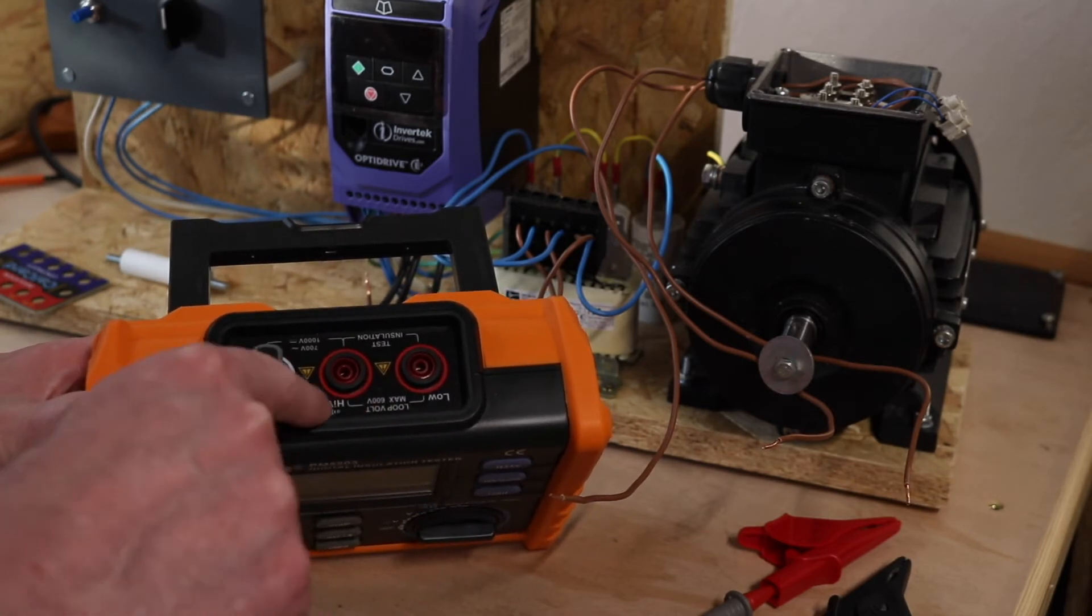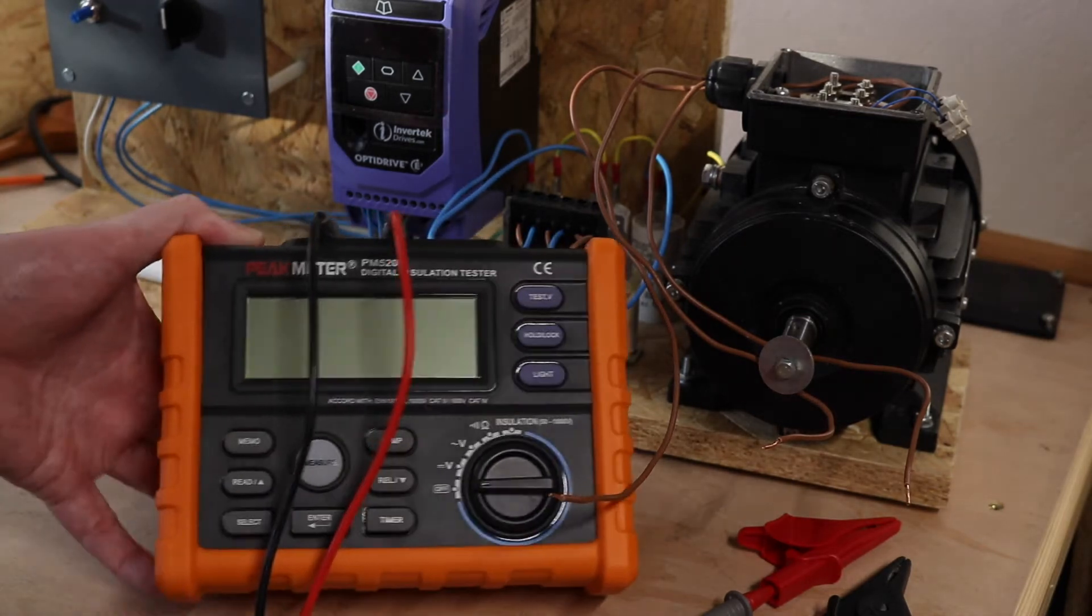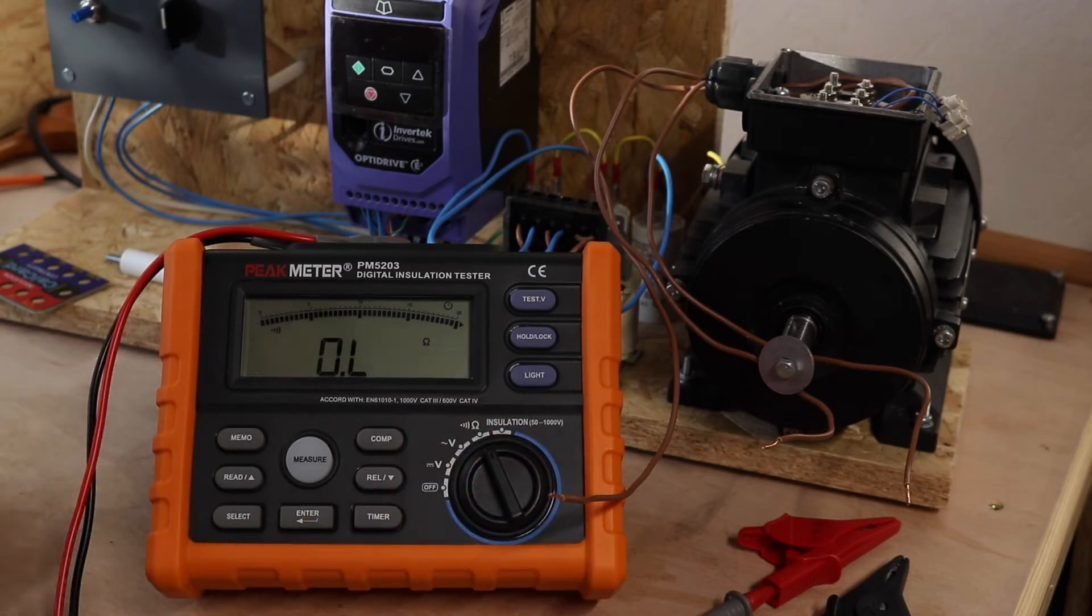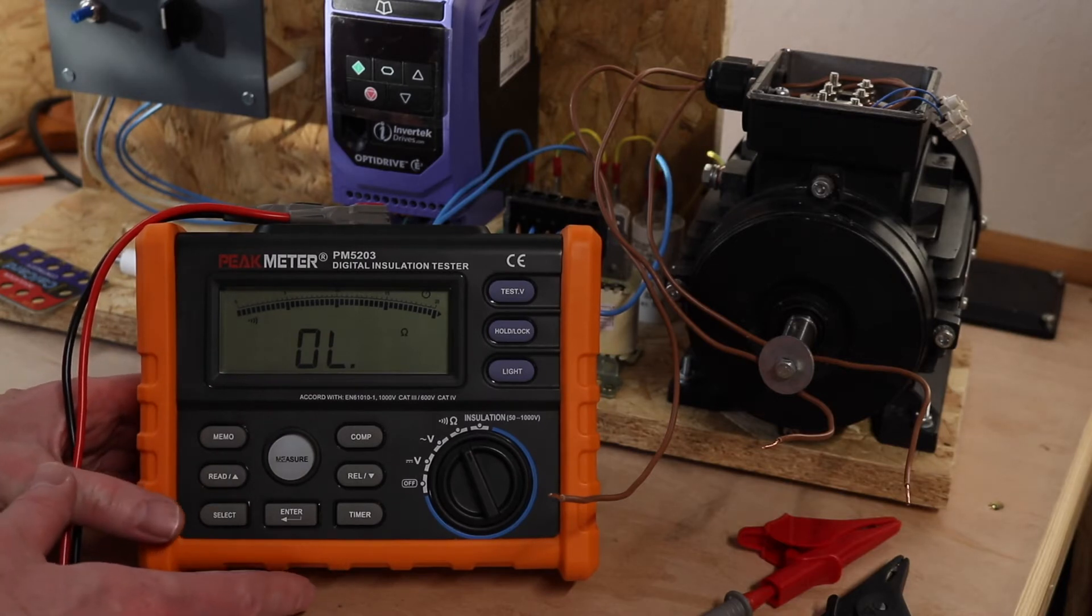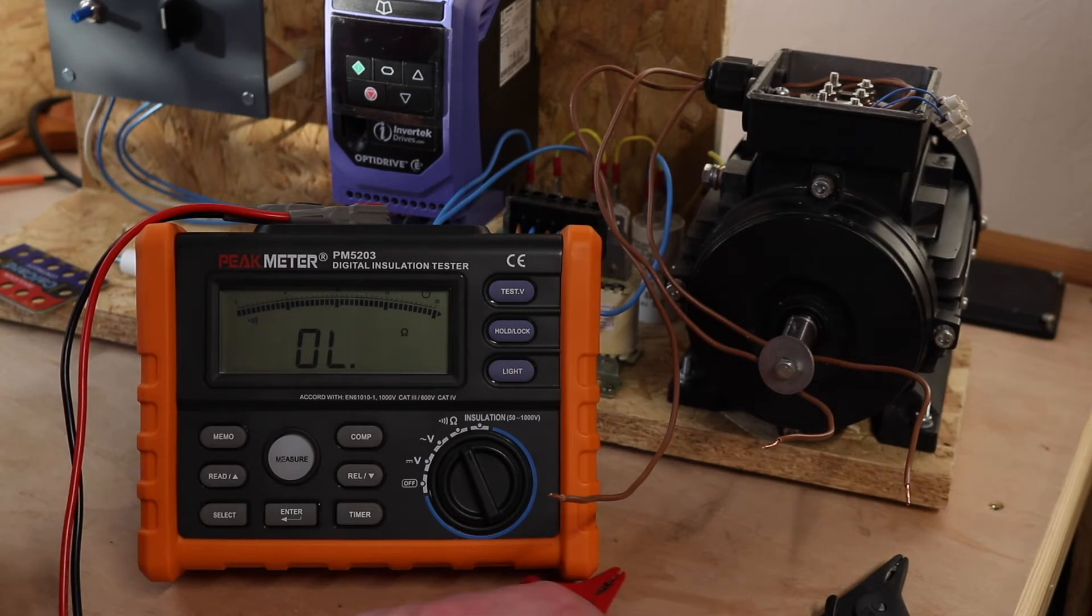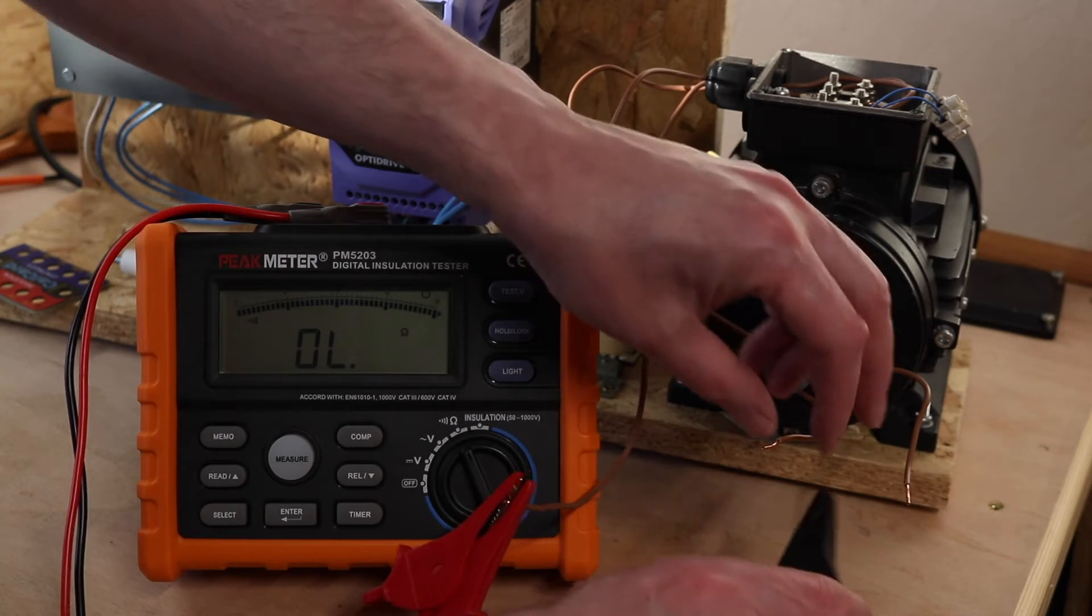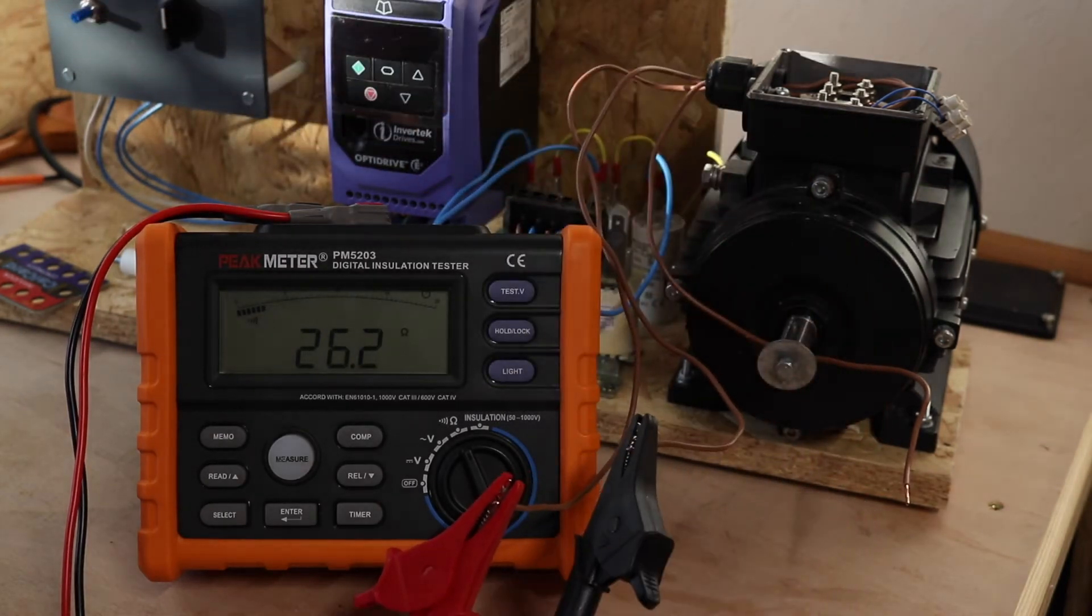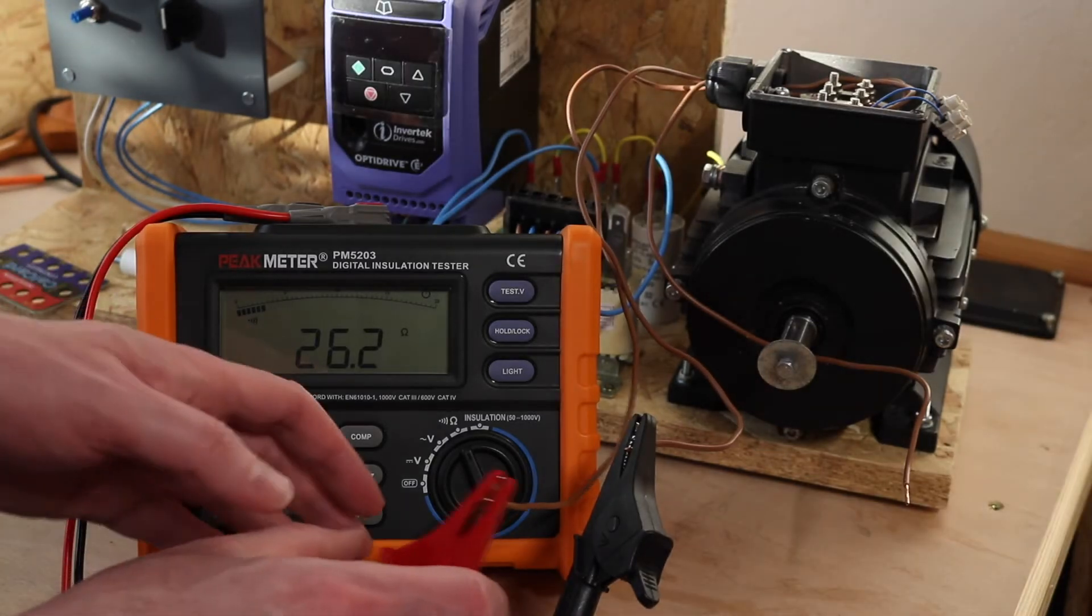To do that, I'm going to use the common terminal and the high V ohms continuity symbol terminal on the left of the instrument. I'll switch the instrument around to ohms continuity. This should be automatic, so I've got L1 to L2 and that's 26.2 ohms.